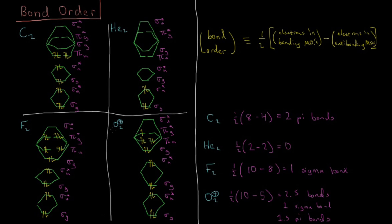You can do the same type of analysis for everything from H2 to Ne2 using these orbitals — for their cations and anions by adding or removing an extra electron — and get the bond order for each of them, as well as how many are sigma bonds and how many are pi bonds.